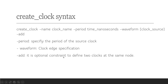The last option is -add, which is an optional constraint to define two clocks at the same node. For example, if I want to give two constraints at the same input port — one analyzing timing for 100 MHz and another for 200 MHz — both can be given together. If both create clock constraints are given without -add, the later one will overwrite the previous one. But if we add -add, both constraints are retained and the timing analysis tool will report timing for both.